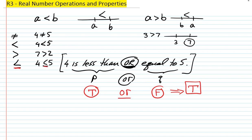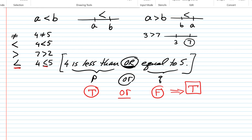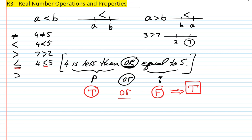So that is why 'four is less than or equal to five' is a true statement. The next inequality symbol is greater-than-or-equal-to. For instance, ten is greater than or equal to seven — it's not equal, but the fact that it's greater than works out.